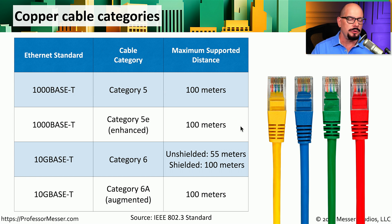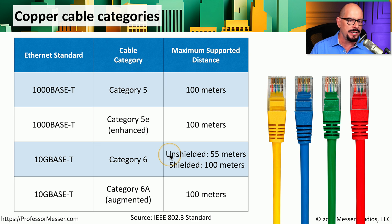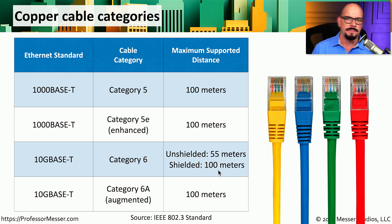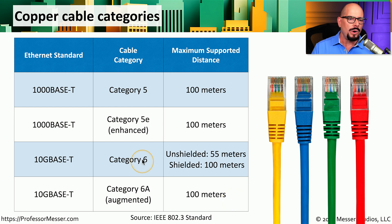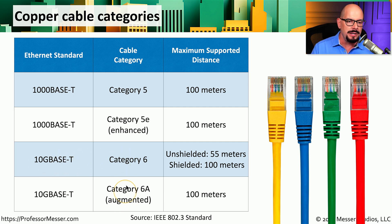If you're running 10 gigabit speeds, you may be running 10GBaseT — 10 gigabit Ethernet over unshielded twisted pair — which requires a minimum of Category 6 cable. Unshielded Category 6 can run up to 55 meters; shielded Category 6 can run up to 100 meters. Category 6A, where A stands for augmented, also supports 10GBaseT to a distance of 100 meters. If you're ever wondering what category of cable to use, refer to the IEEE standards for that specific Ethernet type, and it will tell you the minimum category of cable supported.